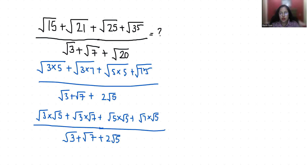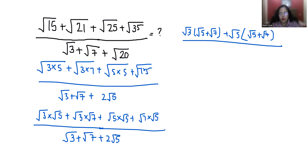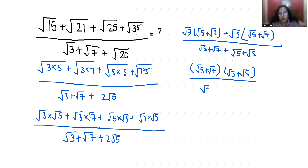Now from the first two terms I take √3 as common, giving √3(√5 + √7), and then √5 as common from the remaining terms, giving √5(√5 + √7). So the numerator becomes (√3 + √5)(√5 + √7), divided by √3 + √7 + 2√5.